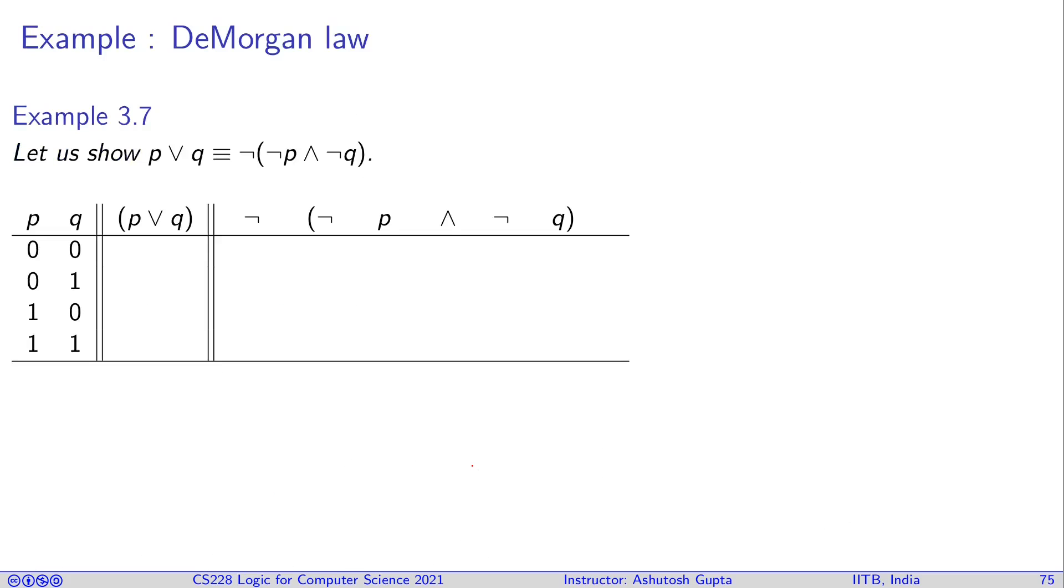Now let's establish a few equivalences which are well known. It's good to use basic ideas and first principles and establish these ideas for ourselves. For example, this is DeMorgan's law. It says that p or q is equivalent to not of (not p and not q). Basically, you can push this negation inside.